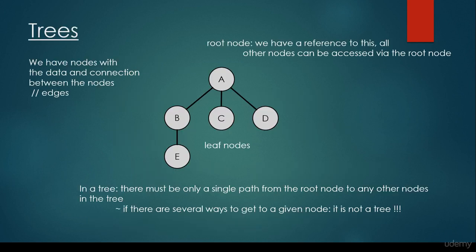So what is a tree? We have nodes with data and connections between the nodes — basically these are the edges. So a tree, quite intuitively, consists of nodes and edges. The root node in this case is node A — we have a reference to this, so all other nodes can be accessed via the root node. In the tree, there must be only a single path from the root node to any other node in the tree.